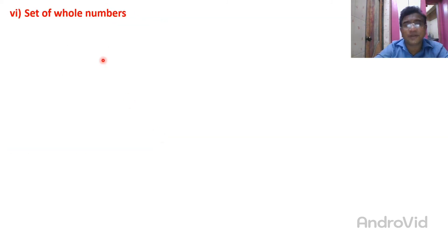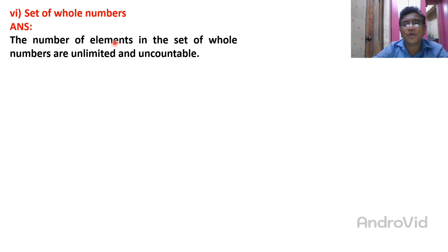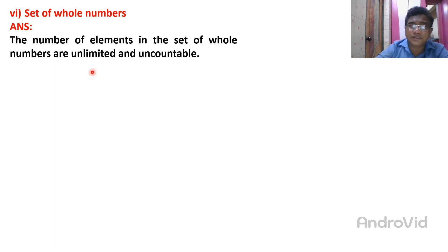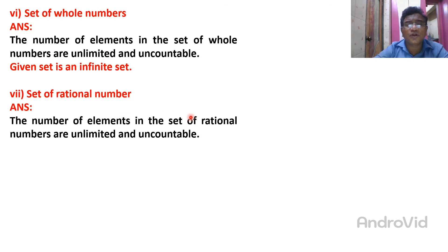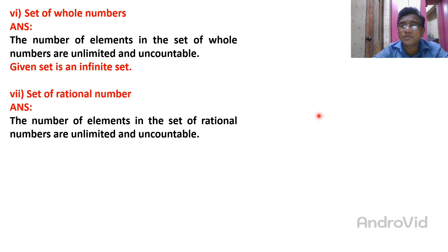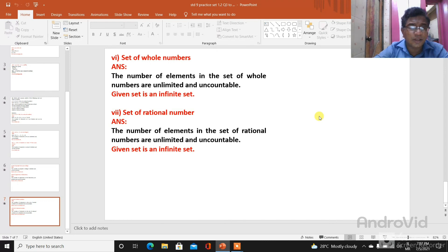The set of whole numbers: whole numbers start from 0, 1, 2, 3 and continue with a dash — they are uncountable and unlimited, so it is an infinite set. Similarly, the set of rational numbers is also infinite because between any two rational numbers there are so many numbers — uncountable and unlimited.